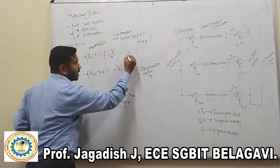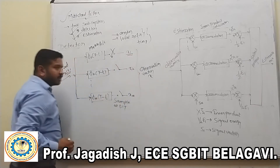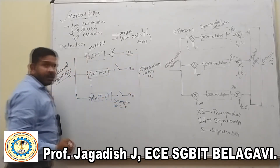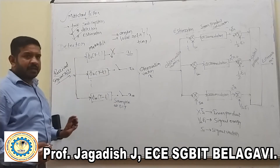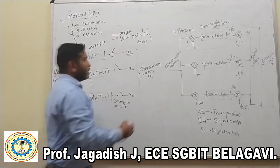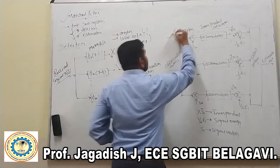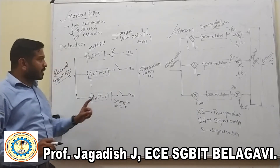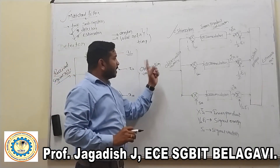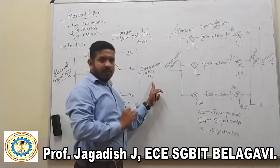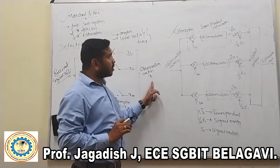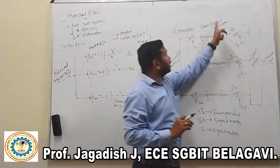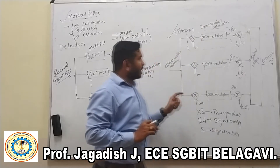Once we get the observation vector, we have to go for the estimation of the symbol. The observation vector is applied to the inner product calculator.